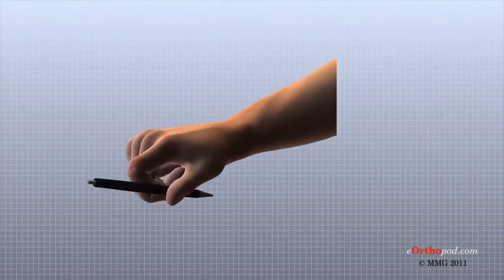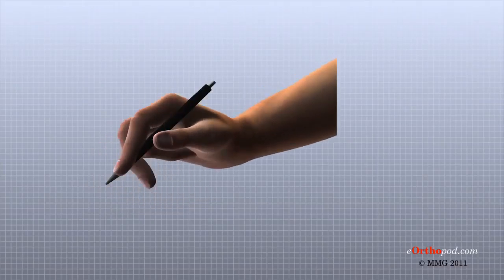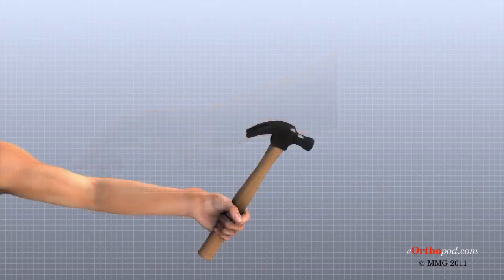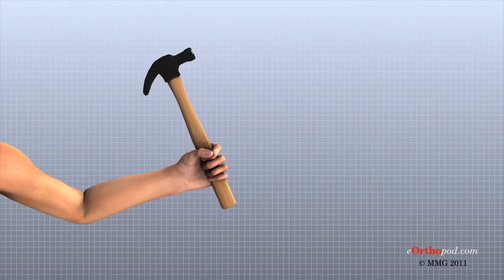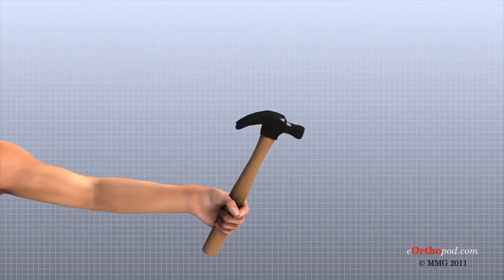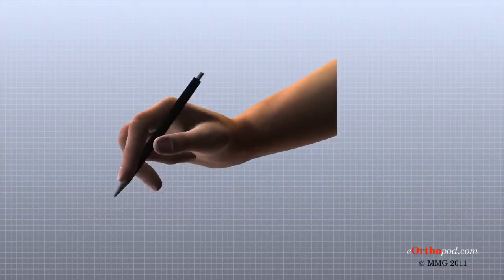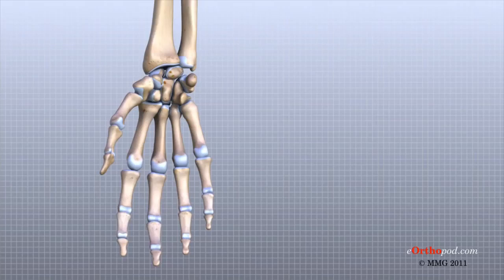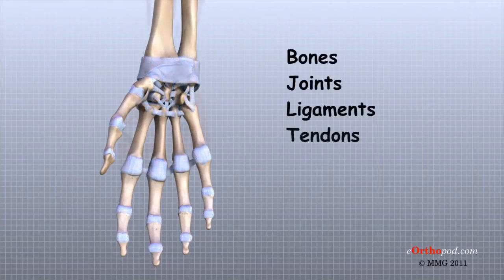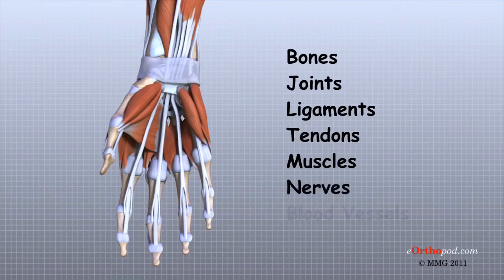Few structures of the human anatomy are as unique as the hand. The hand needs to be mobile in order to position the fingers and thumb. The hand must have adequate strength to grip objects firmly, but must also be coordinated to perform fine motor tasks with precision. The important structures of the hand can be divided into several categories: bones, joints, ligaments, tendons, muscles, nerves, and blood vessels.